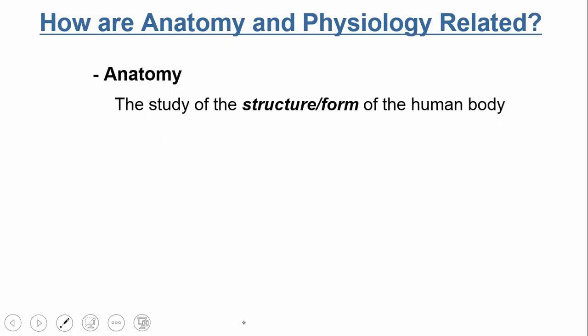The next question is: how are anatomy and physiology related? So anatomy is the study of the structure or form of the human body — in other words, identifying what something is. That's a hand. This is a clavicle bone. This is your skin.